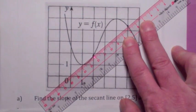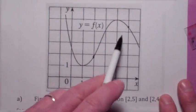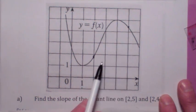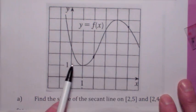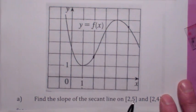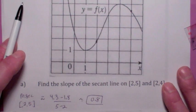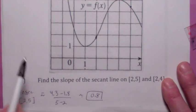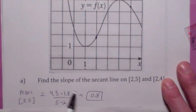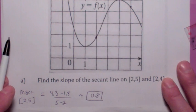All you have to do is take the change in y over change in x from those two points. This y-coordinate is about 4.3 and this one is about 1.8. So the slope of the secant line on 2 to 5 becomes 4.3 minus 1.8 divided by 5 minus 2, which is about 0.8.